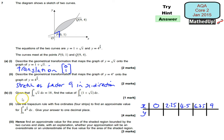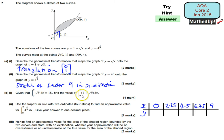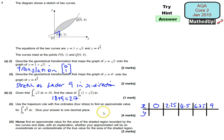Part B: the integral of root x between 0 and 9 is 18. For 1 plus root x, because this has been a translation of 1 upward, there is an extra 9 by 1 rectangle fitted under the curve. So the integral increases by 9, making it 18 plus 9, which equals 27. The value of this integral is therefore 27.